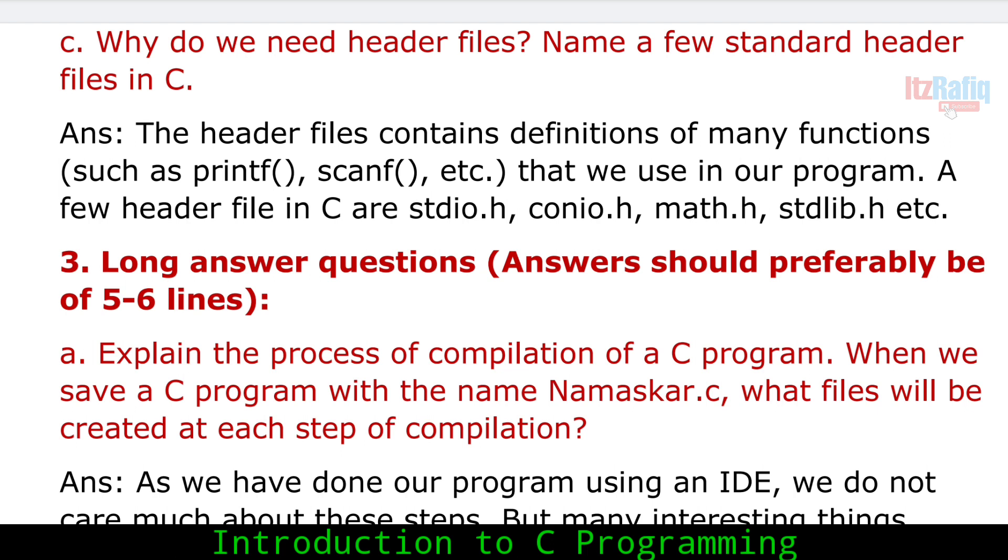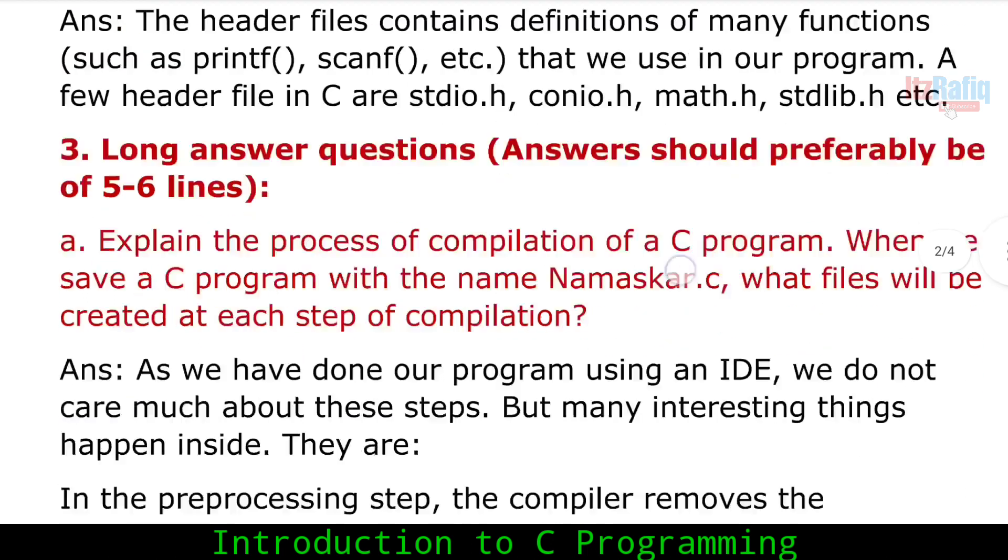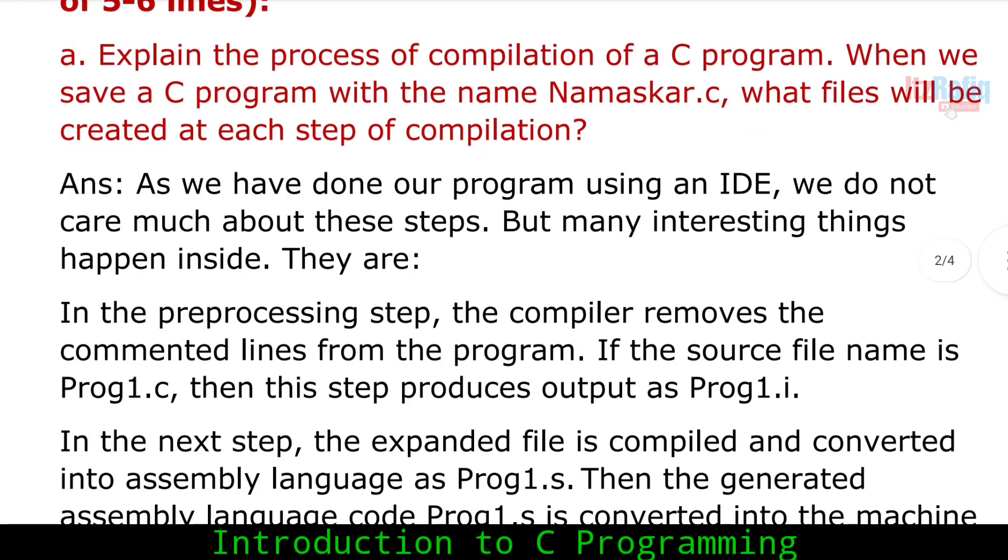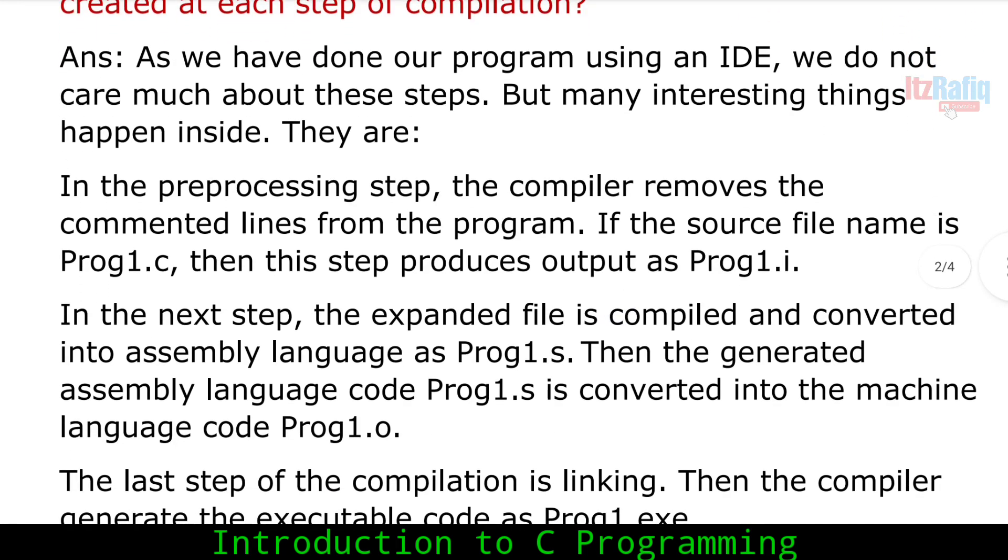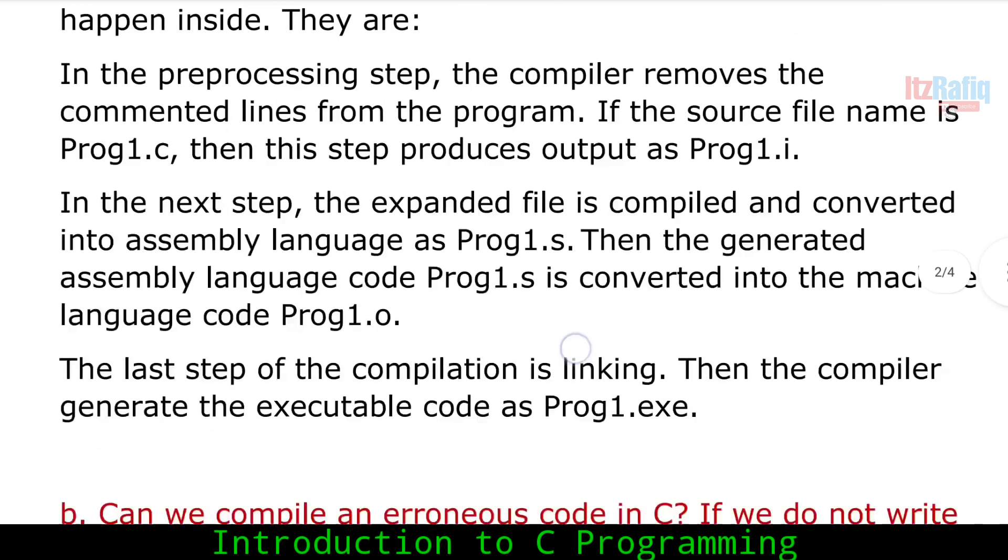Explain the process of compilation of a program. When we save a program with .c extension, what files will be created at each step of compilation? It's very interesting. The first step is preprocessing, where we remove comment lines from the program. If the source file name is Prog1.c, then this step produces output as Prog1.i.